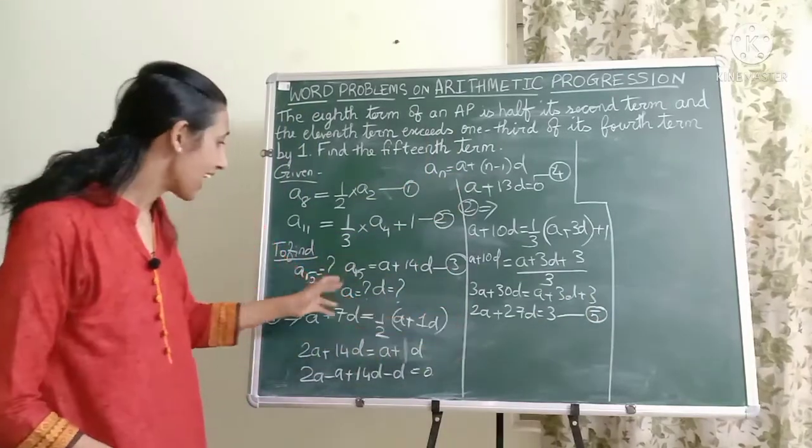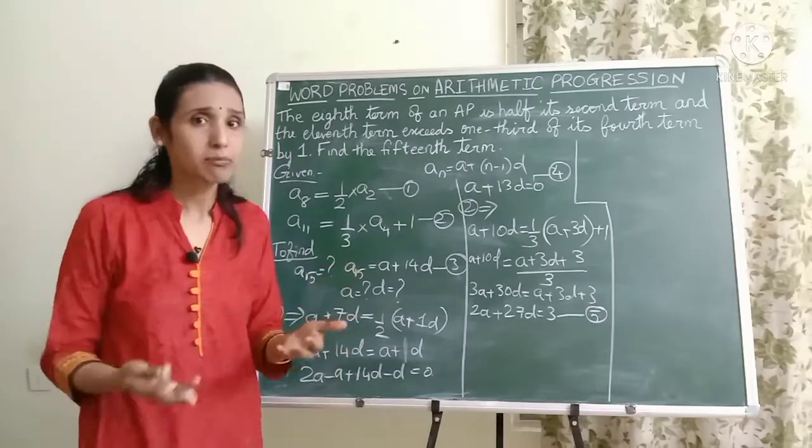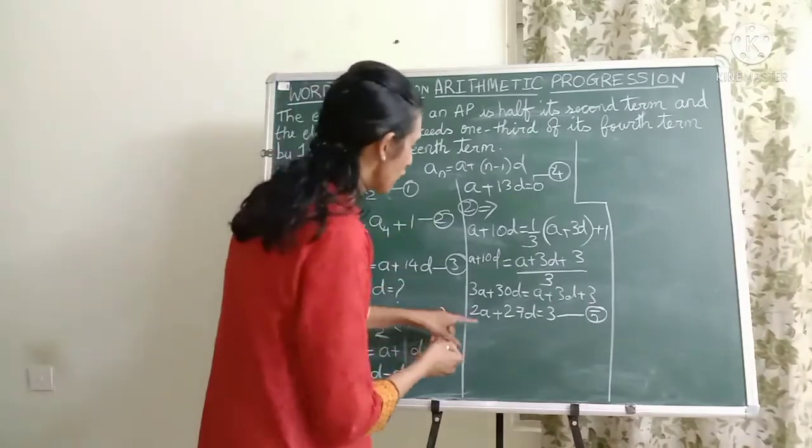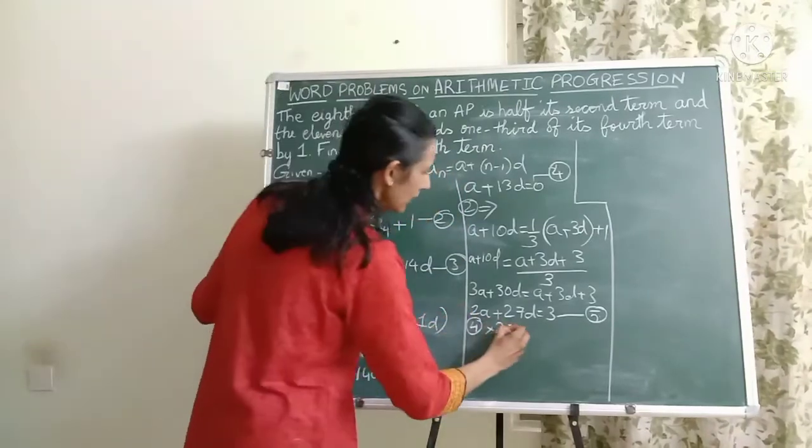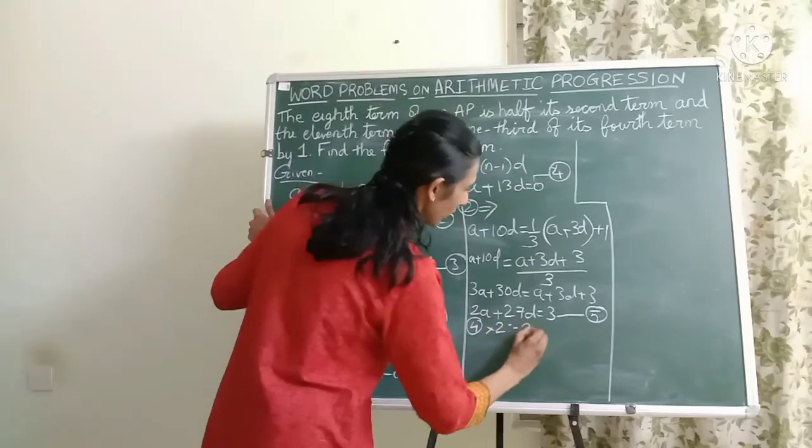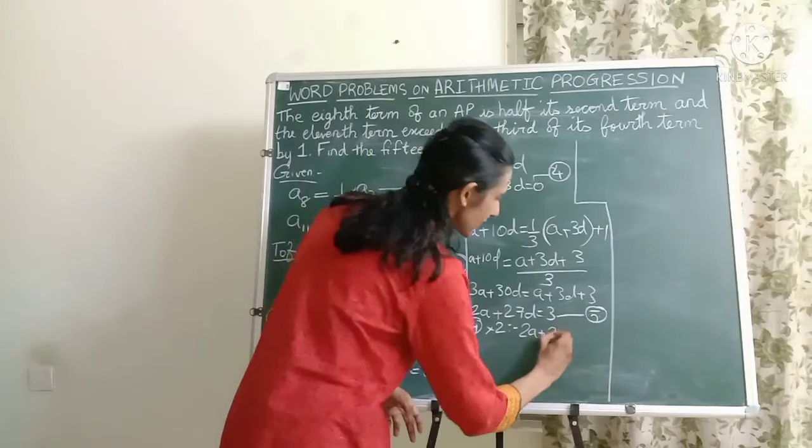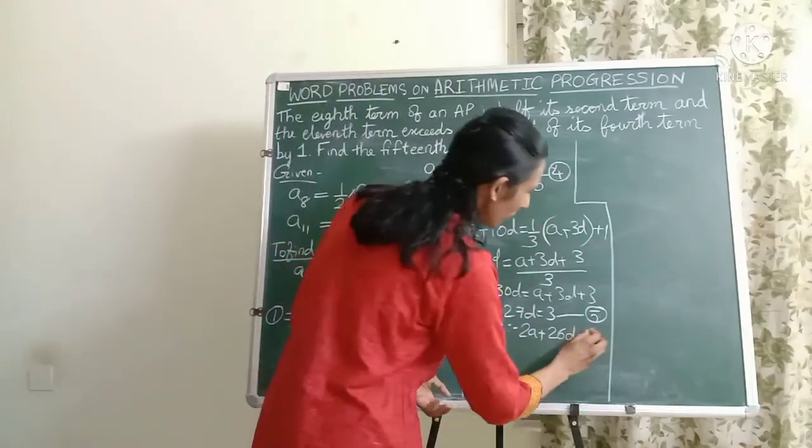So I have two equations and I have two unknowns. These are linear equations. Use any method which you know to solve it. I'll use the elimination method. So I'll just multiply the fourth equation by 2. What will happen then? I will get 2A plus 26D equals 0.